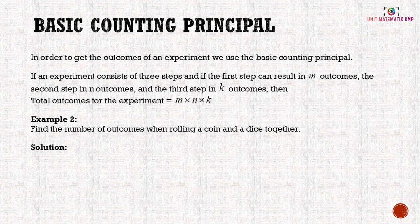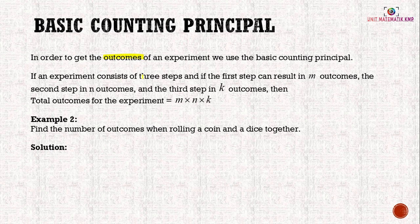Basic counting principle: in order to find the total outcomes of an experiment, we use the basic counting principle. If an experiment consists of 3 steps, and the first step can result in m outcomes, the second step in n outcomes, and the third step in k outcomes, then the total outcomes for the experiment is m × n × k. For example, if we flip a coin 3 times, each flip has 2 outcomes, so the total is 2 × 2 × 2.